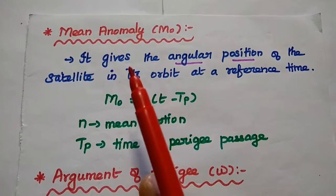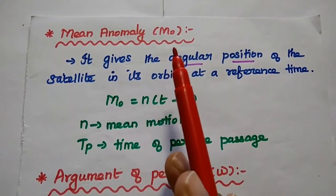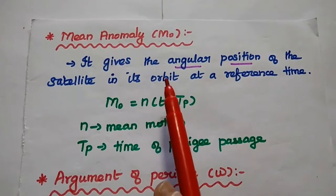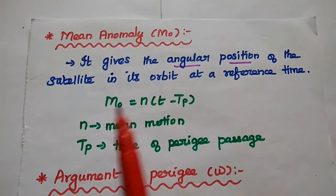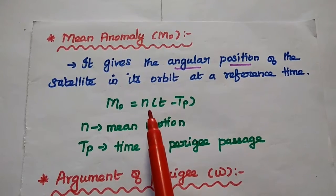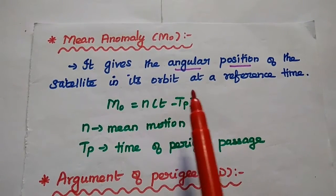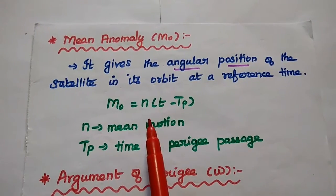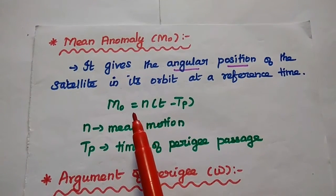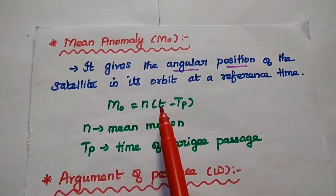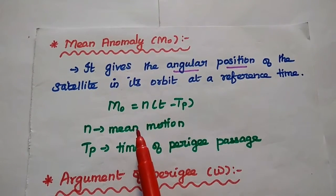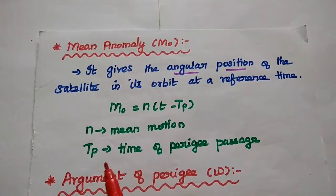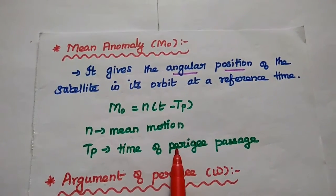The next element is mean anomaly, represented as capital M. It is mainly used to represent the angular position of the satellite in its orbit with reference to the perigee point at a reference time. It can be calculated using the formula: M₀ = N × (T − Tp), where T is the reference time, N is the mean motion, and Tp is the time of perigee passage.